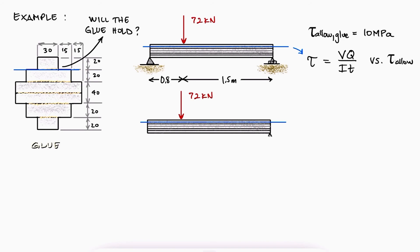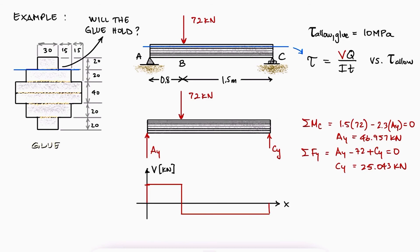The maximum shear force V can be found if we draw a free body diagram, write a sum of moments about C and the sum of forces in Y, and find the reaction forces at A and C to draw a shear force diagram. We see that the maximum shear force V occurs anywhere between A and B and that its magnitude is almost 47 kilonewtons.